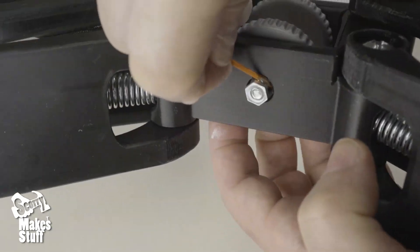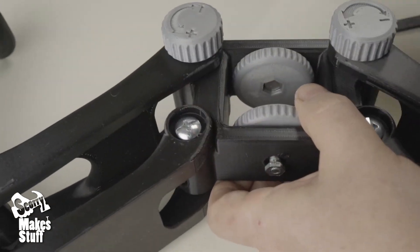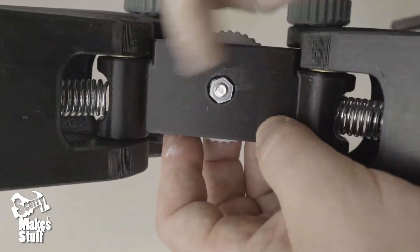Once the epoxy resin initially sets, give the wheel a gentle turn just in case the nut has accidentally got stuck to the plastic.